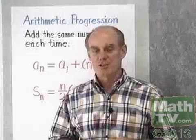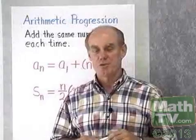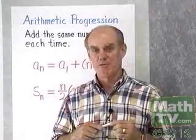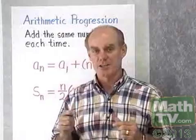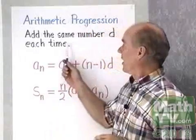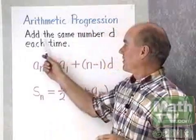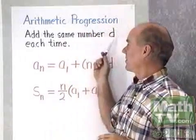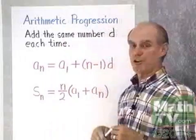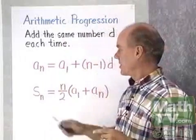As you know, an arithmetic sequence is a sequence in which each term comes from the term before it by adding the same number each time. I've written over here the definition: add the same number, d, each time, and d is called the common difference.